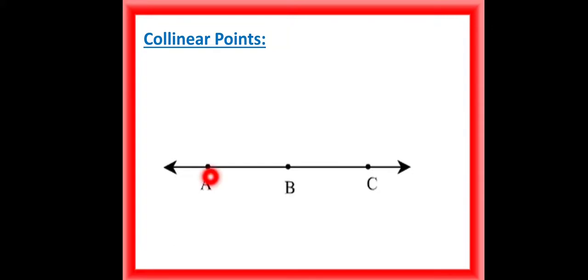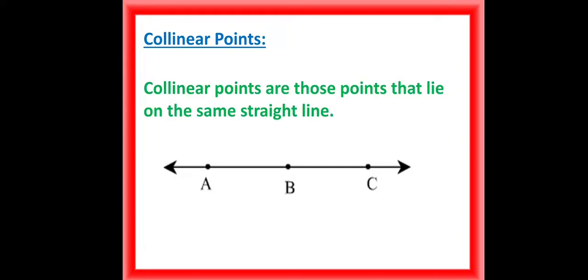Here the points A, B, and C lie on a straight line. So in this case you can say that the points A, B, and C are collinear.